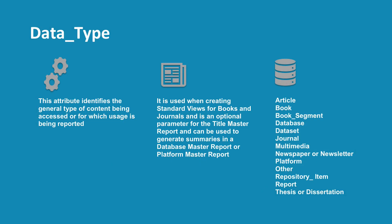The first attribute we will discuss today is the Data Type. This attribute identifies the general type of content being accessed, or for which usage is being reported. Data Type is used when creating standard views for books and journals, and is an optional parameter for the Title Master Report.